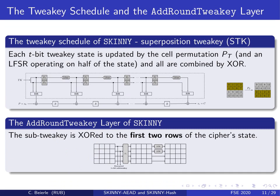For the Skinny version with tweak-key size of two times the block length, we separate the tweakey state into two 128-bit blocks. The update function in each round is a cell permutation layer PT on each of these two states, and then one of these states is updated by an LFSR operation. The sub-tweakey is generated by XORing the two states together. Importantly, the XOR to the cipher state only affects the first two rows, so we don't XOR the full 128-bit tweakey but only 64 bits of tweakey in every round.